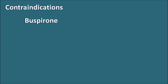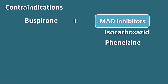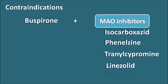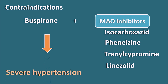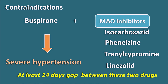Contraindications: buspirone should not be given with MAO inhibitors. Drugs in the MAO inhibitor class include isocarboxazid, phenelzine, and tranylcypromine. Apart from these, linezolid — an antibacterial agent which also has weak MAO inhibitory activity — is also contraindicated. When any of these drugs are given along with buspirone, it leads to severe hypertension, similar to a cheese reaction, due to elevated levels of monoamines. That's why this combination is contraindicated, and at least a 14-day gap should be maintained between the use of these two drugs.